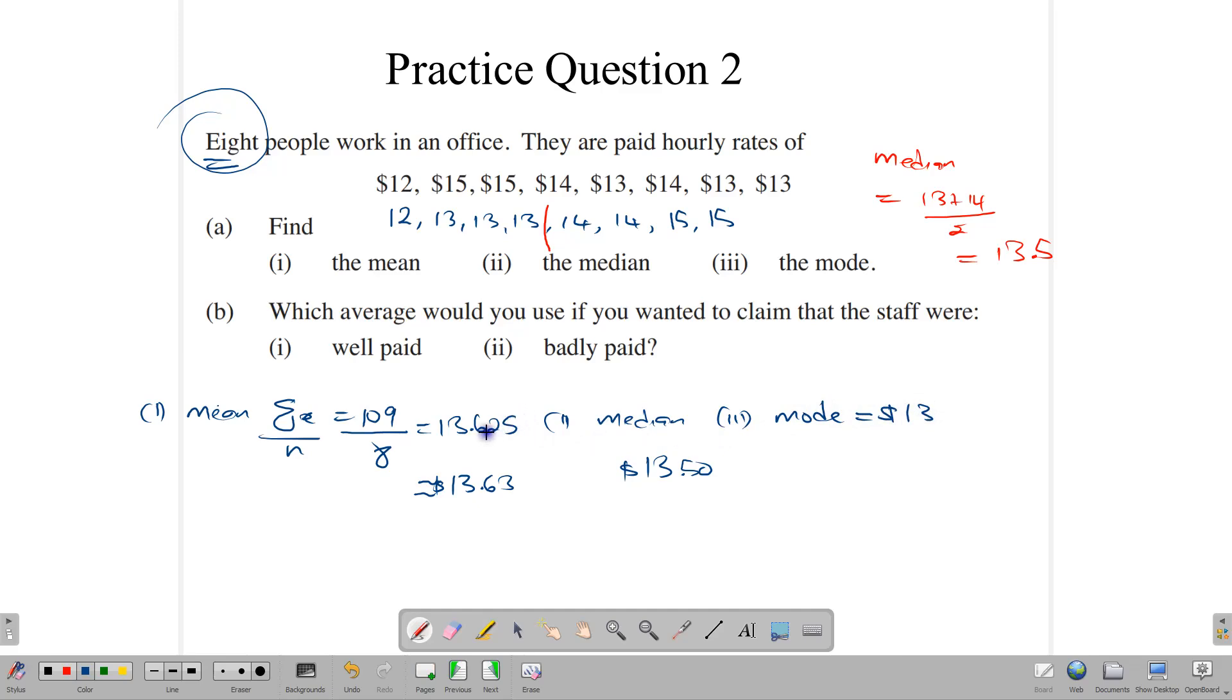So we have our three averages, the mean, the mode, the median, constructed from raw data.